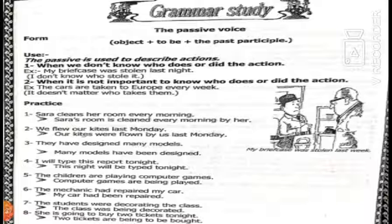Let's practice the passive by reading and explaining sentences. Number one: 'Sarah cleans her room every morning.' To change to passive, start with the object — 'Sarah's room' — then look at the verb: 'cleans' is present simple, so we use am/is/are + past participle. 'Sarah's room is cleaned every morning by her.' Number two: 'We flew our kites last Monday.' Object: 'our kites.' Verb: past simple — use was/were + past participle. 'Our kites were flown by us last Monday.'